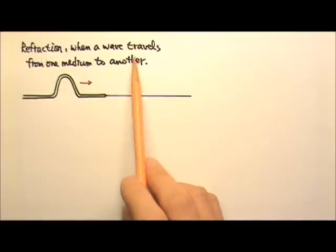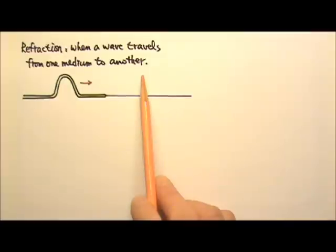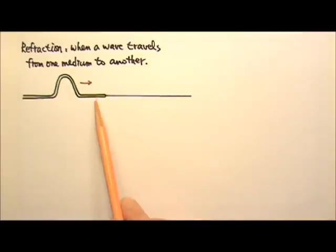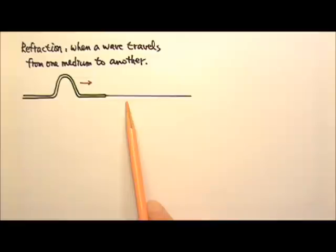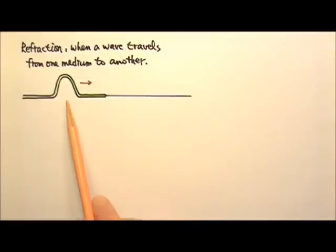Refraction happens when a wave travels from one medium into another. For example, I can have a thick rope tied to a thin rope. Refraction would happen when a wave travels from the thick rope into the thin one.